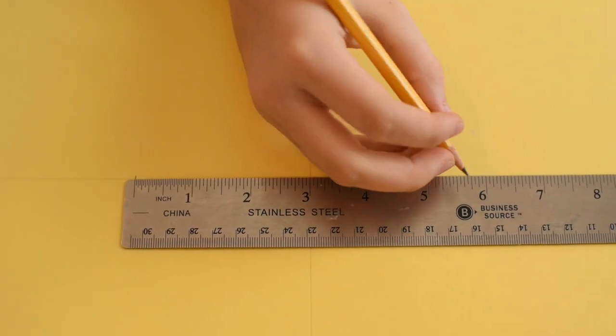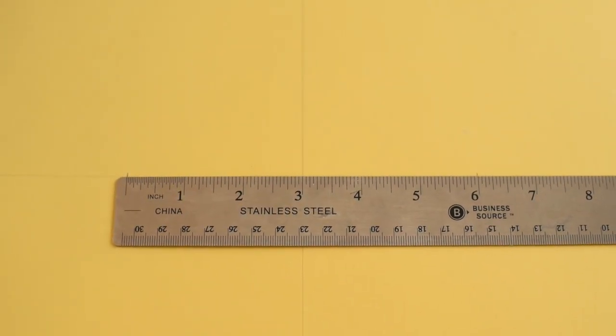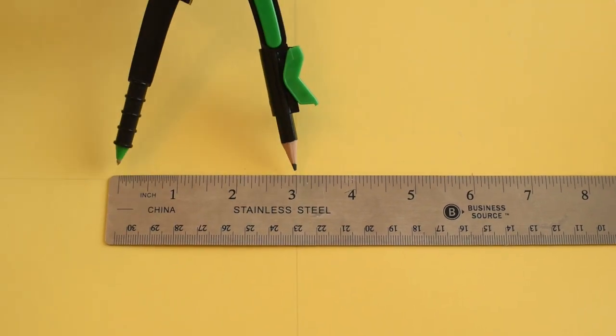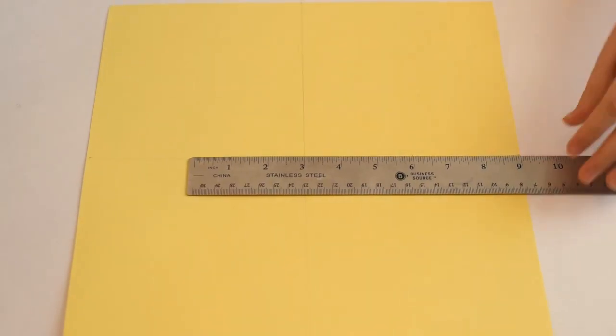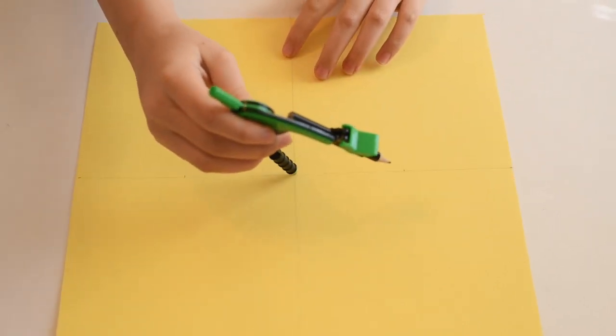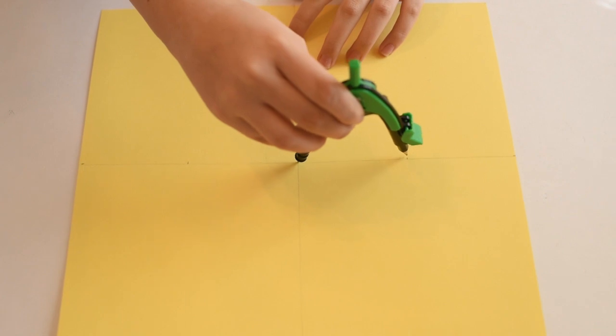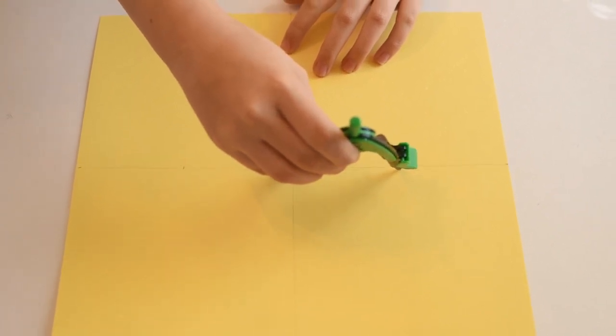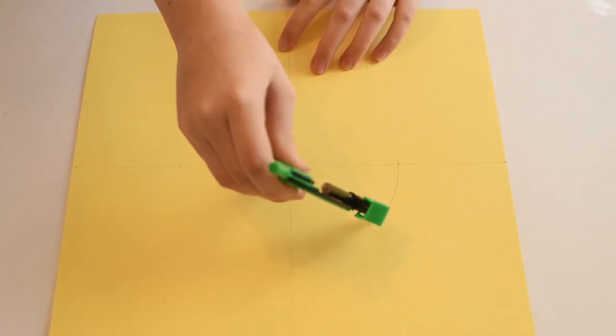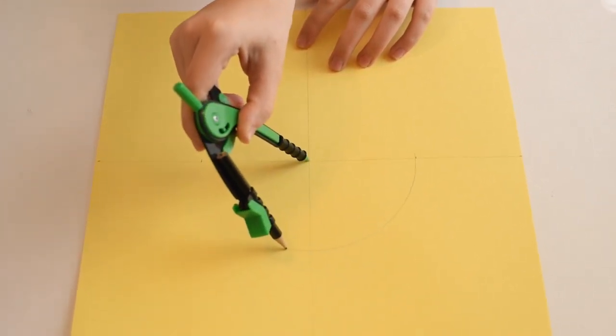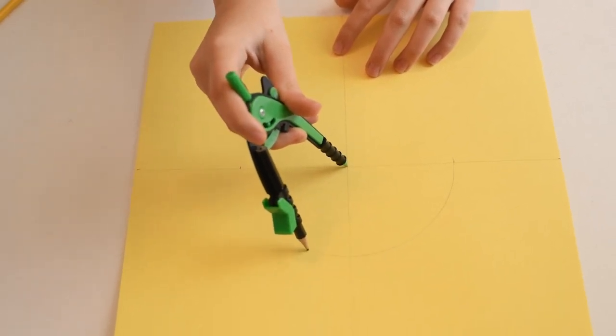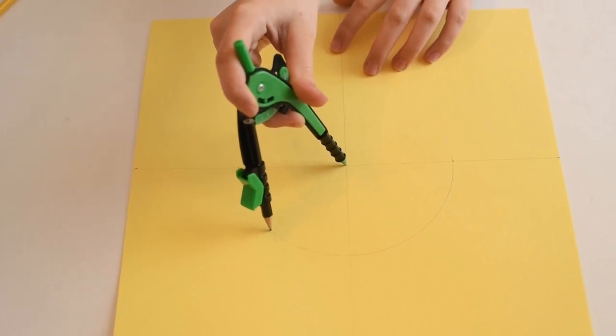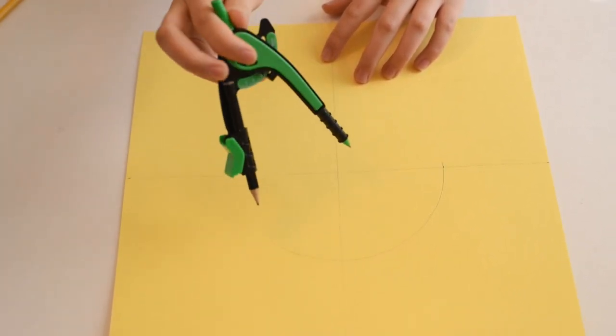So we're going to set the compass to equal 3 inches, and we're going to draw a circle around that middle point. And it's okay to reset that middle point anytime you need to to get a better angle with your hand. This takes a little practice.